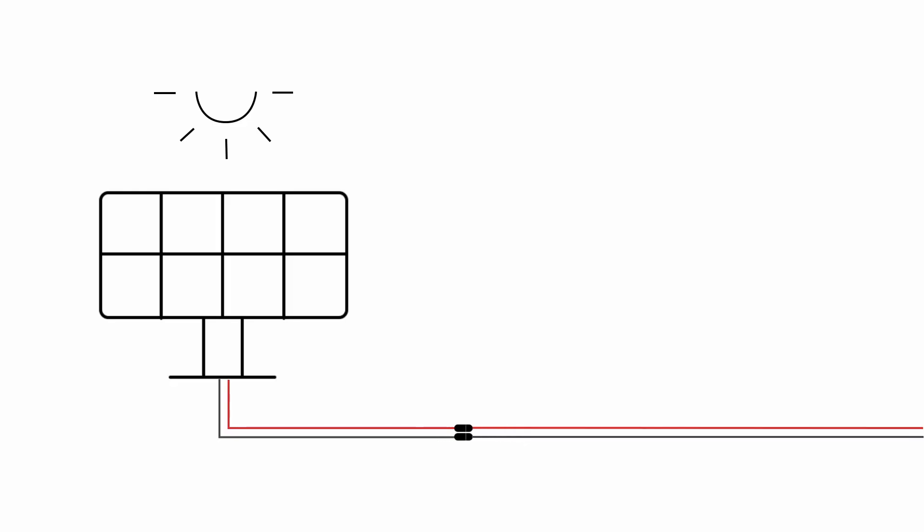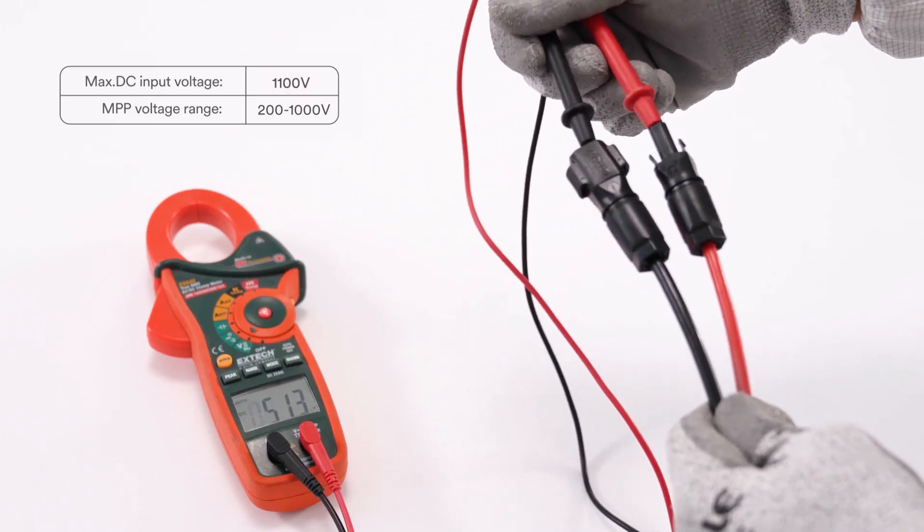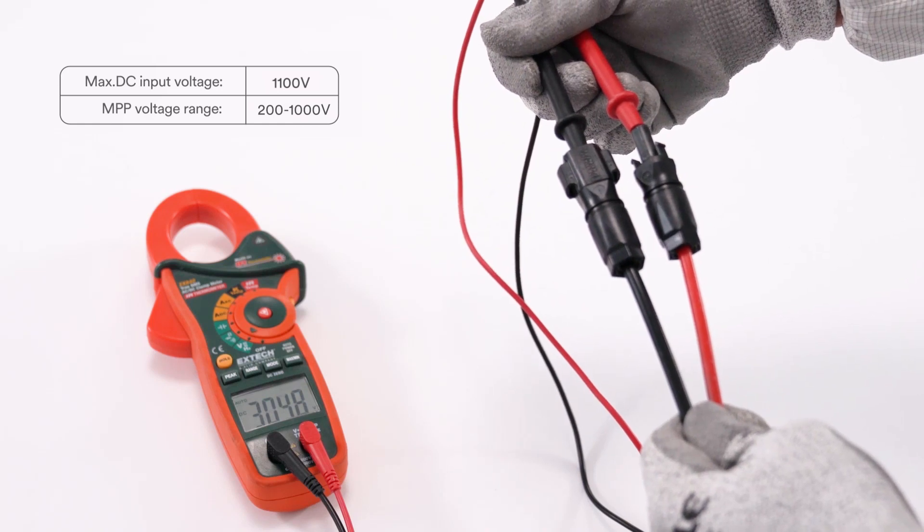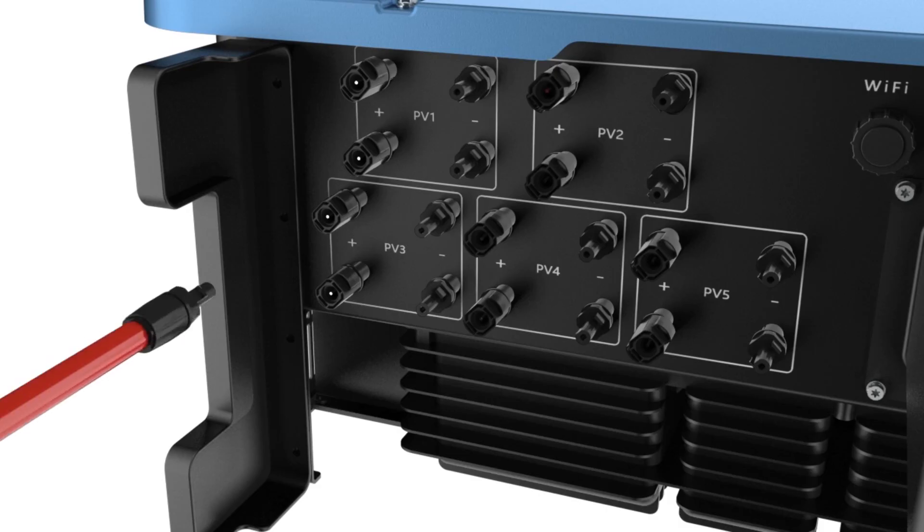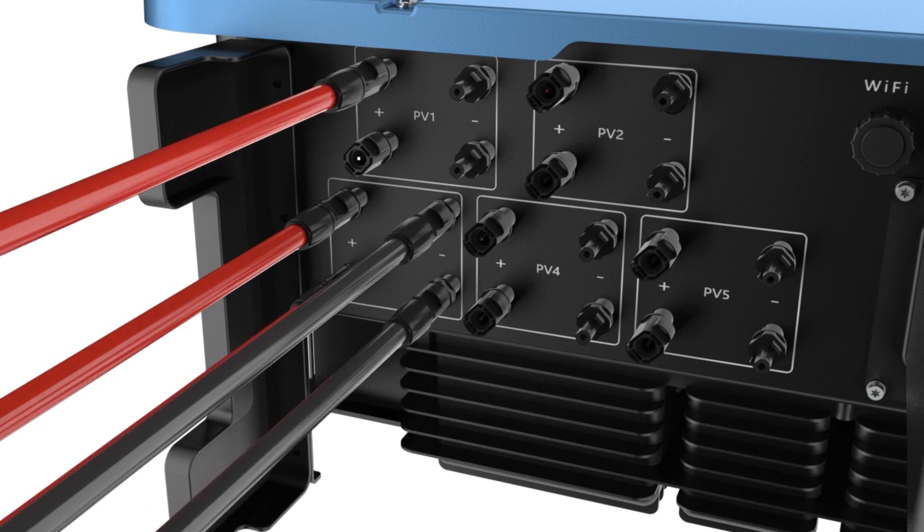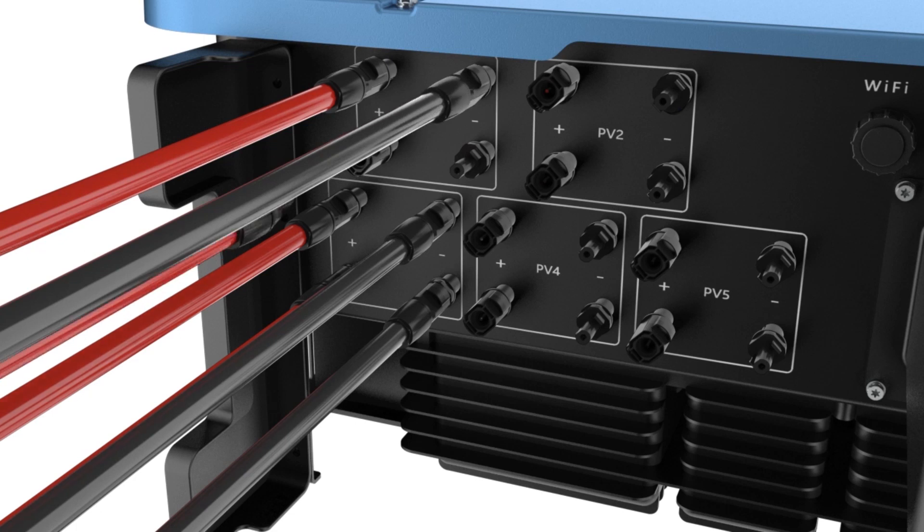Connecting the PV array: check whether the DC connector has the correct polarity. Ensure that the open circuit voltage of the PV array does not exceed the maximum DC input voltage of the inverter. Connect the assembled DC connectors to the inverter until they audibly snap into place. Ensure that all DC connectors are securely in place.